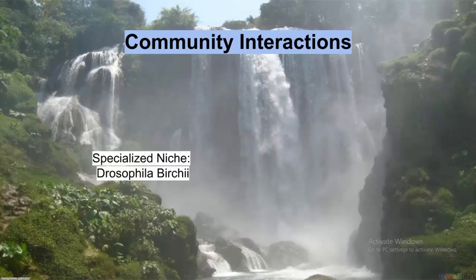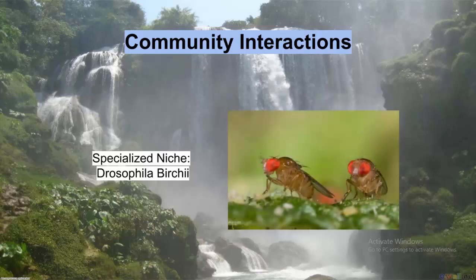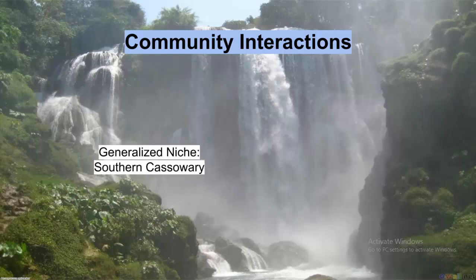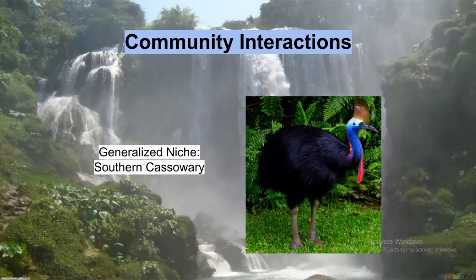A specialized niche is created by the close proximity of trees in the understory, which is home to arboreal animals like the Drosophila birchi. On the other spectrum, a generalized niche is created by the large trees of any one species, since they aren't usually close neighbors. Therefore, organisms like the Southern Cassowary must by necessity have a large range.